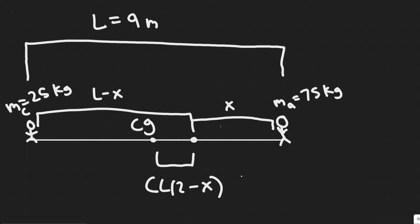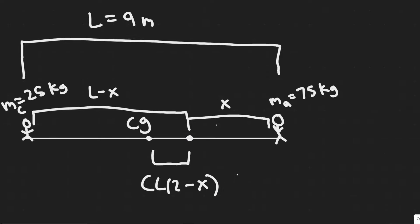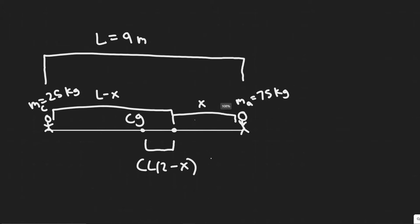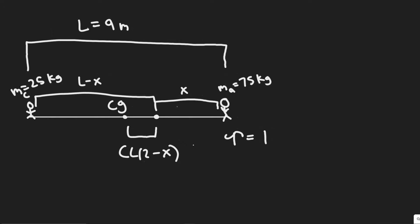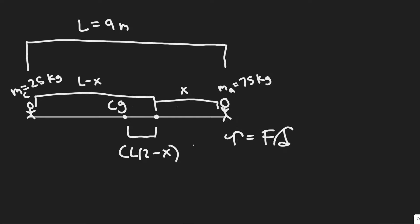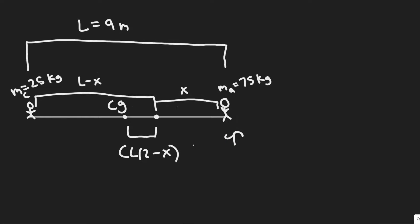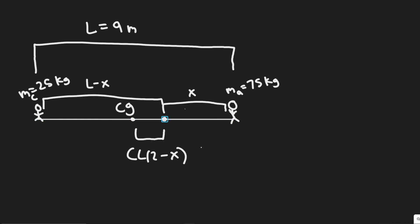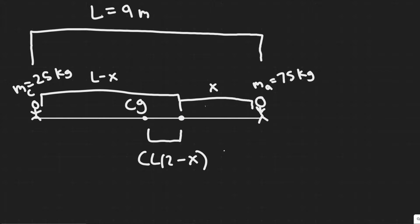The pivot point has to be closer to the adult, because torque equals force times distance. Since the adult's mass creates a greater force, the distance to the pivot must be less in order to balance the smaller force on the child's side. So we know intuitively the pivot is going to be closer to the adult. In part A we're ignoring the board's mass, but in part B we will include it.